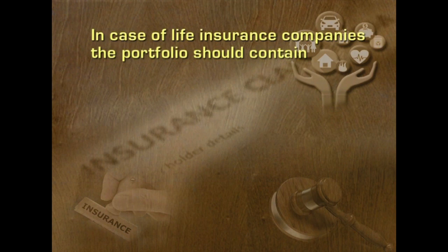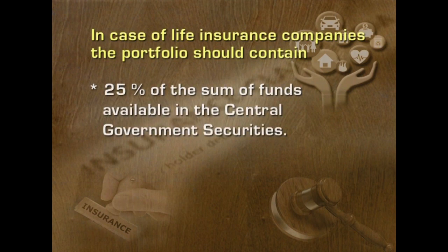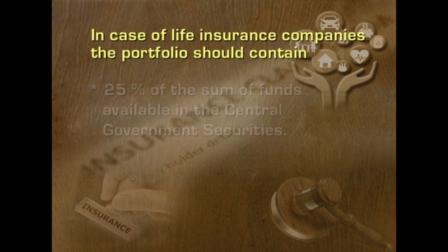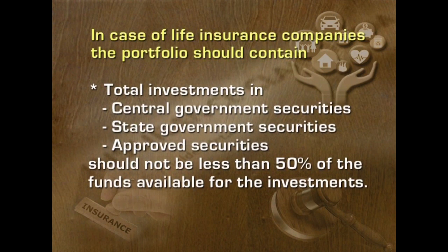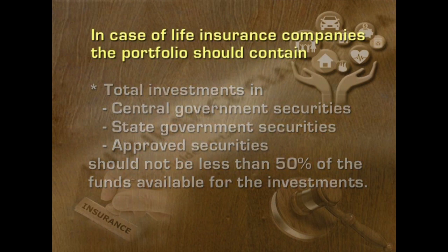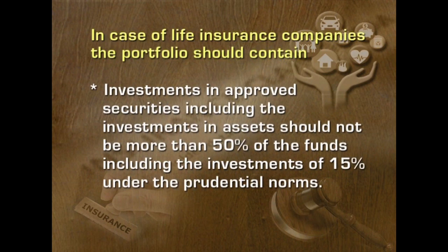In case of life insurance companies, the portfolio should contain 25% of the sum of funds available in central government securities. Total investment in central government securities, state government securities and approved securities should not be less than 50% of the funds available. Investments in approved securities including investments in assets should not be more than 50% of the funds including investments of 15% under prudential norms.